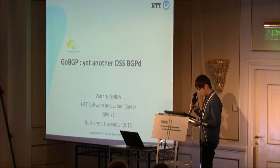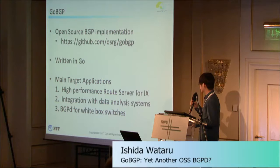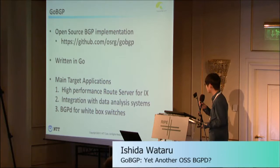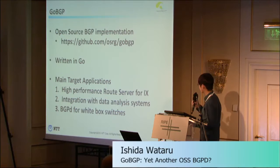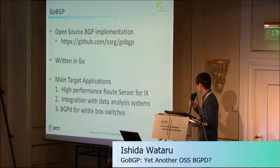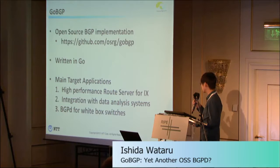GoBGP is an open source BGP implementation hosted on GitHub. As you can see from the name, it is written in Go. It is under Apache 2 license. The main target applications of GoBGP are: first, high-performance route server for internet exchanges; second, integration with data analysis systems; and third, BGP daemon for white-box switches.